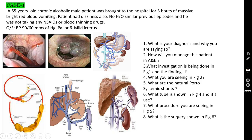Esophageal varices are graded into four grades. Grade 1: dilatation of the vein but not protruding into the esophageal lumen. Grade 2: vein protrudes into the lumen. Grade 3: more dilated veins but normal esophageal mucosa is visible in between. Grade 4: the entire circumference shows only dilated veins with no normal mucosa visible in between. The second picture shows endoscopic banding, which is the procedure performed.